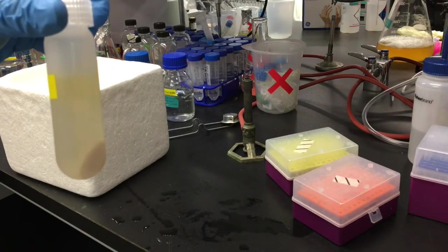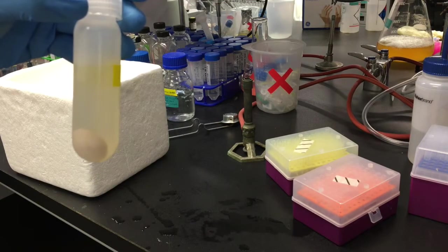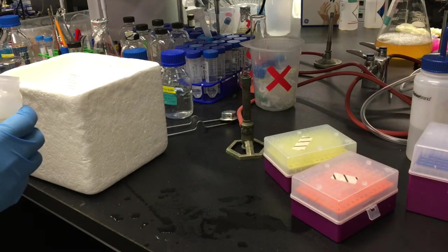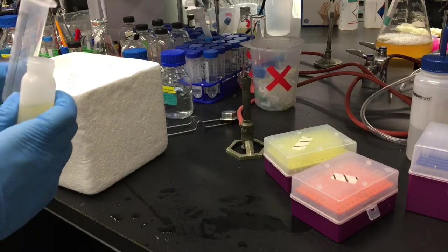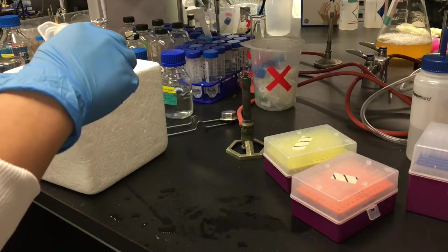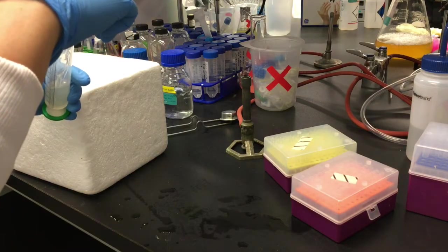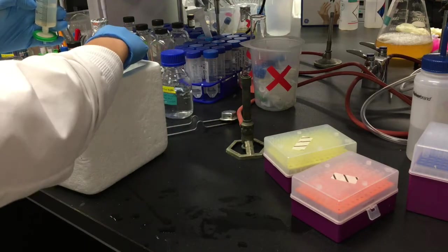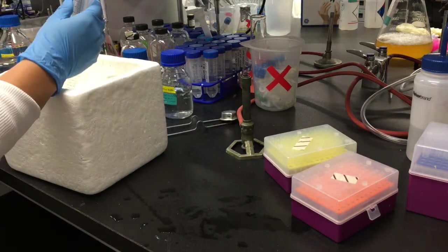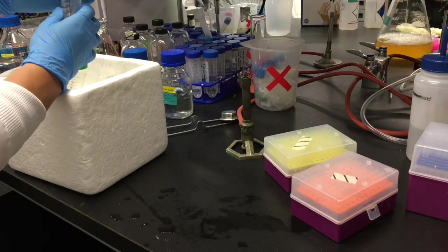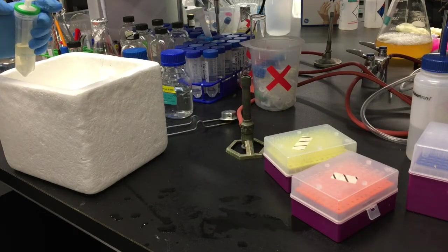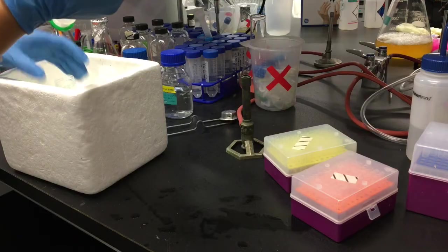Insoluble cell debris will form a pellet at the bottom of the tube. You can collect the soluble fraction by decanting, and you can further remove any particulate matter by passing it through a 0.45 micron syringe filter. At this stage, we're ready to perform immobilized metal affinity chromatography, or more precisely, in this case, nickel affinity chromatography. I'm going to show you two ways to do nickel affinity chromatography.